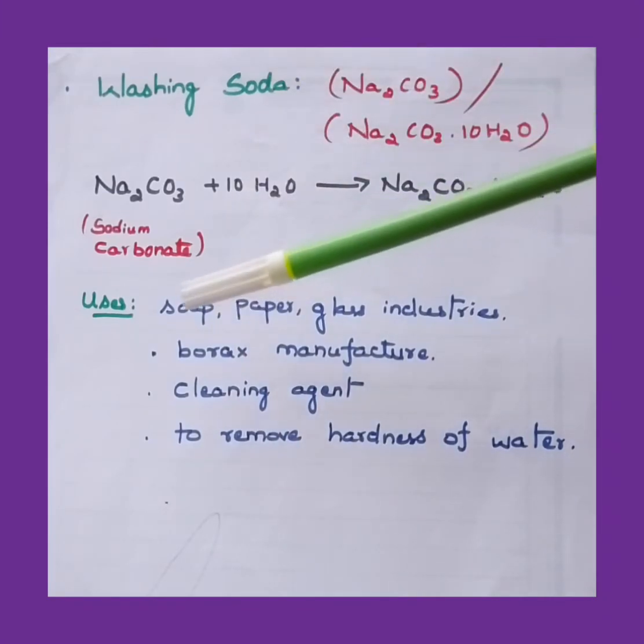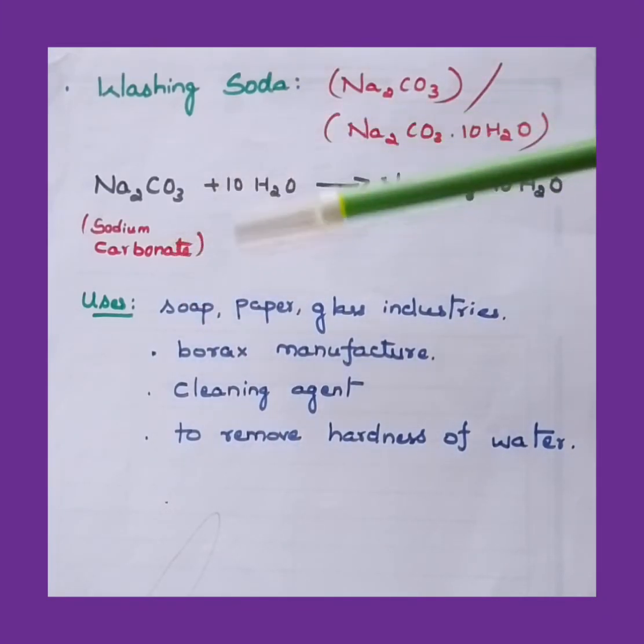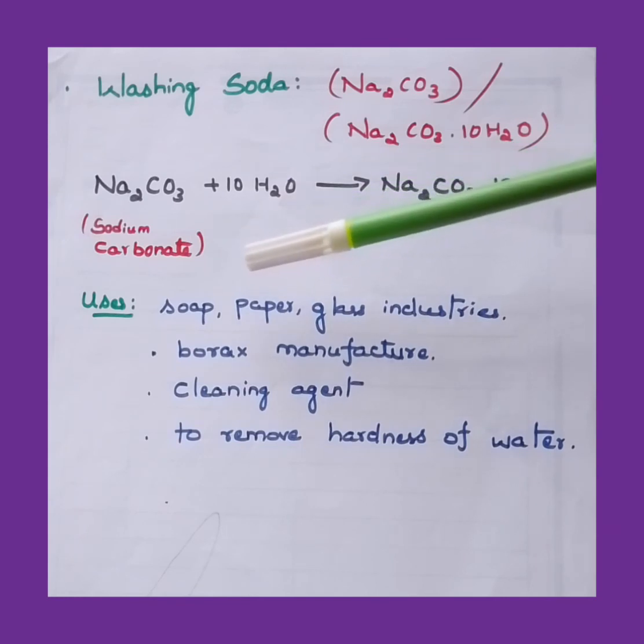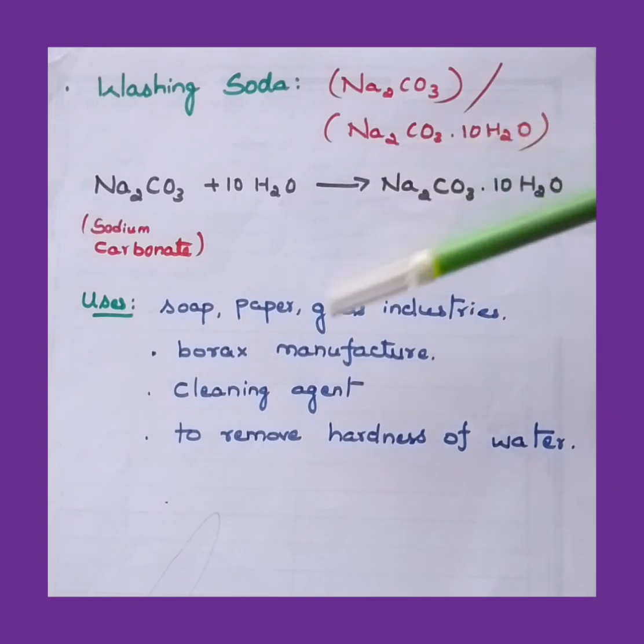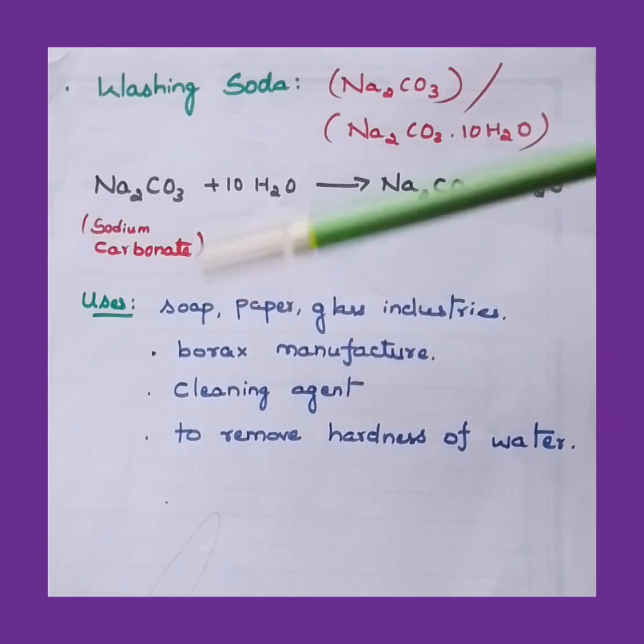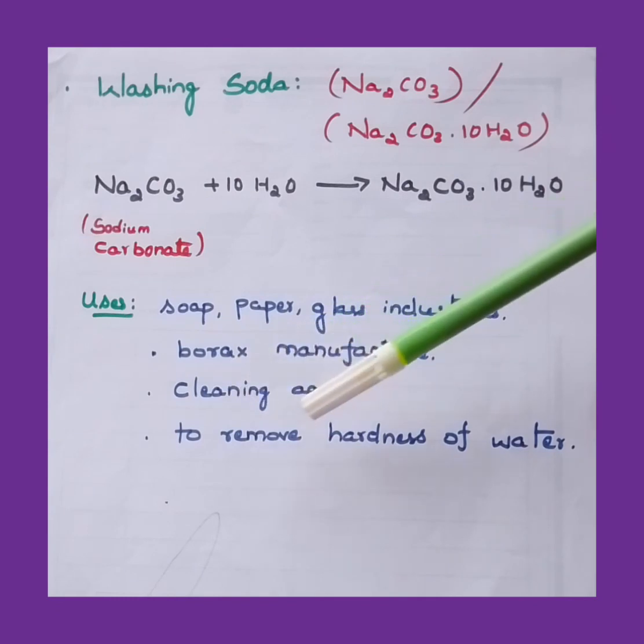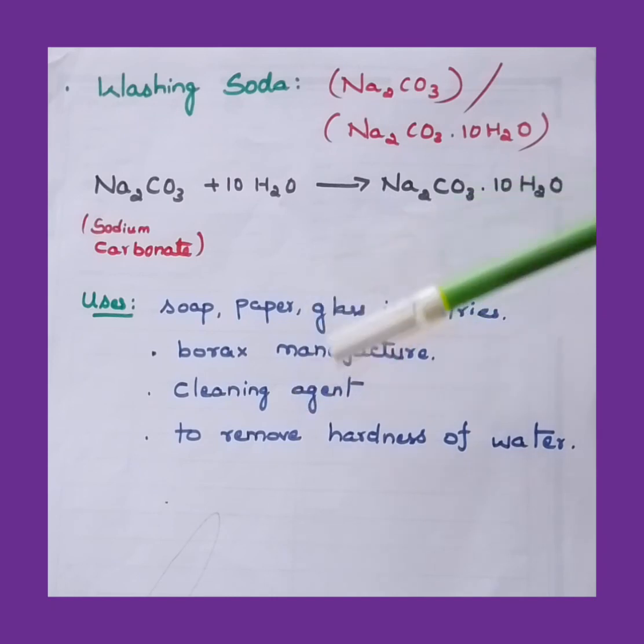As we move further to check out the uses of washing soda. Washing soda generally used in the manufacture of soap, paper and glass etc. in the respective industries. And also, they are used as a cleaning agent, borax manufacture. You can find this borax in toothpaste, even in the mouth wash. It's a cleaning agent. And also, especially like a cleaning agent, the borax washing soda is used. And also, to remove hardness of the water, washing soda is used. These are the main uses.